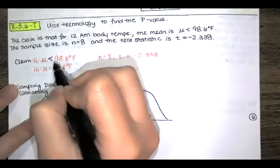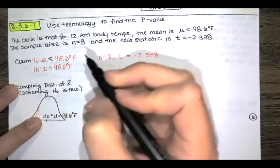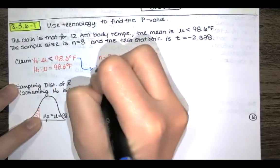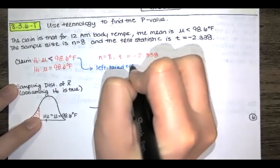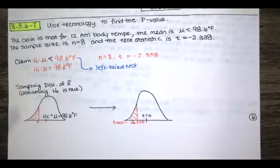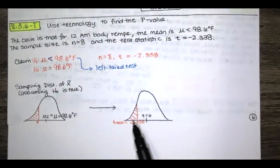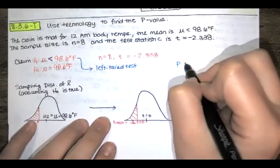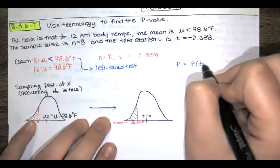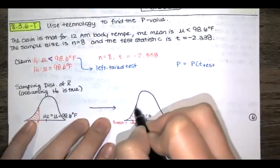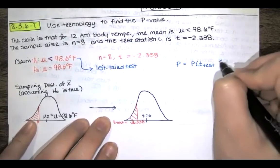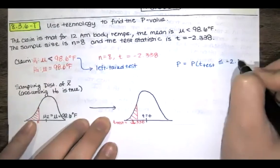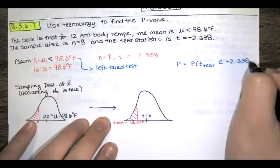Because of that less than sign, which is like an arrow pointing to the left, we know that this is a left-tailed test. Since it is a left-tailed test, the p-value is a probability that a test statistic is equal to the test statistic that we got or less than that. So that's negative 2.338 in this case.